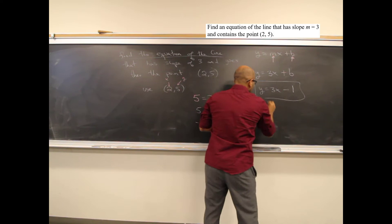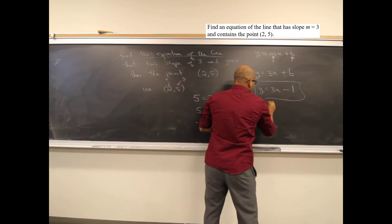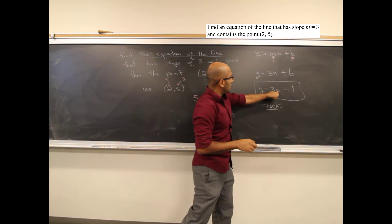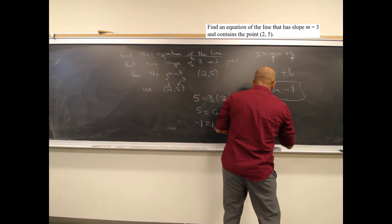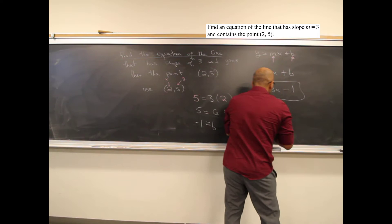We can check it by plugging in x equals 2. Is it true that y equals 5? Yes — 3 times 2 is 6, minus 1 is 5. So 5 is really the answer when x is replaced by 2 in this equation. True.